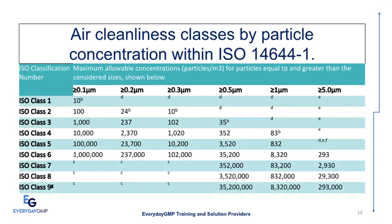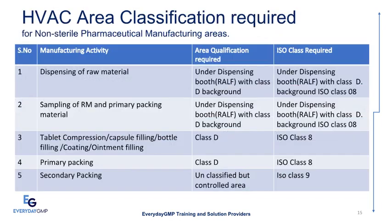Air cleanliness classes by particle concentration within ISO 14644-1, focusing on ISO Class 8. HVAC area classification required for non-sterile pharmaceutical manufacturing areas: dispensing of raw materials is under a dispensing booth with Class D background, equivalent to ISO Class 8. Sampling of raw materials and primary packing — including tablet compression, capsule filling, bottle filling, coating, and ointment filling — is in Class D (ISO Class 8). Primary packing is also in Class D. Secondary packing is an unclassified but controlled area.